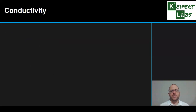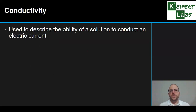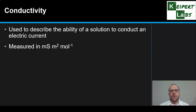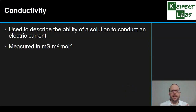So what do we mean by conductivity? Conductivity describes the ability of a solution to conduct an electric current. We measure it in units called millisiemens — that's what the capital S refers to — millisiemens per square metre per mole. That combination of units basically relates to how the different quantities are put together to actually measure it.